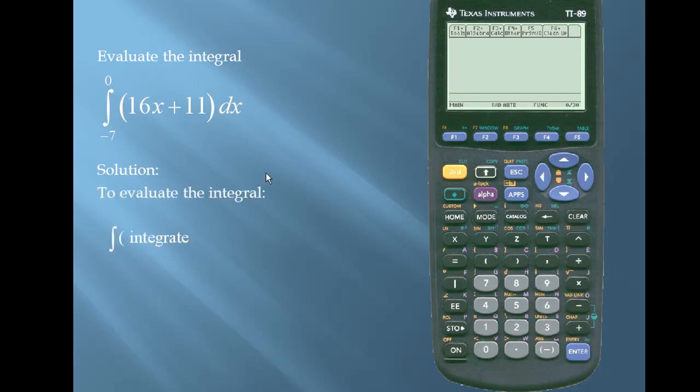Here's the TI-89 graphing calculator solution. We'll use the integrate function. We'll put in our expression 16x plus 11. We'll put in our variable of integration, which is x. We'll put in our lower limit of negative 7 and our upper limit of 0.